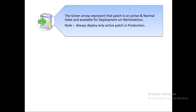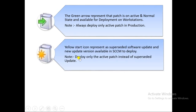The yellow star icon represents superseded patches. If patches are superseded, that means a new patch has been released that replaces them. You can still deploy superseded patches and they will install, but Microsoft recommends not deploying superseded patches — only deploy active patches.